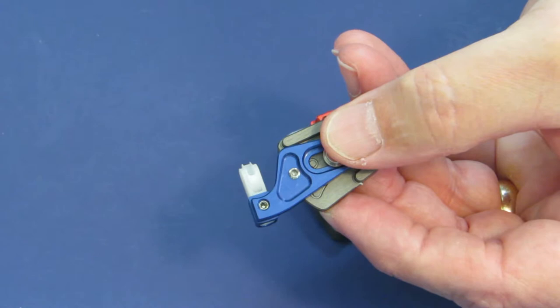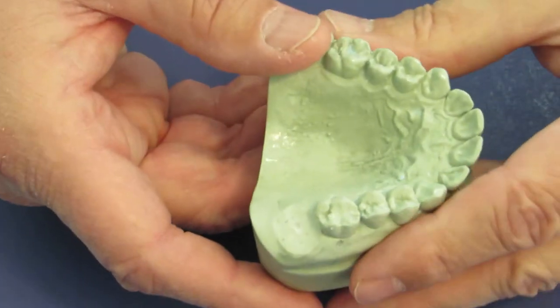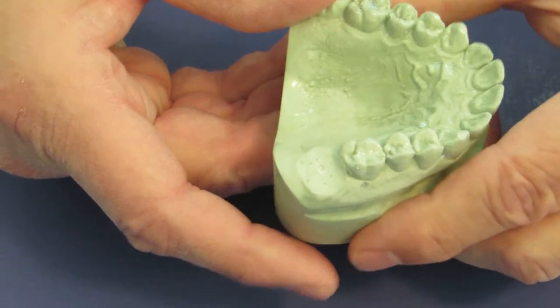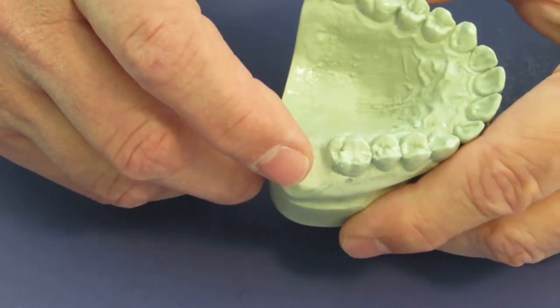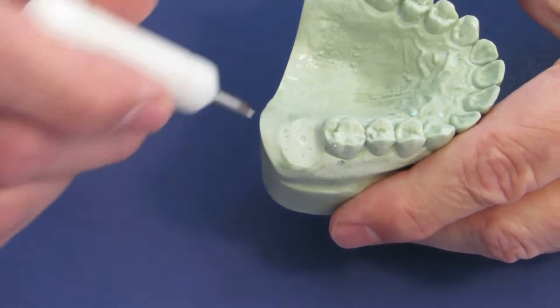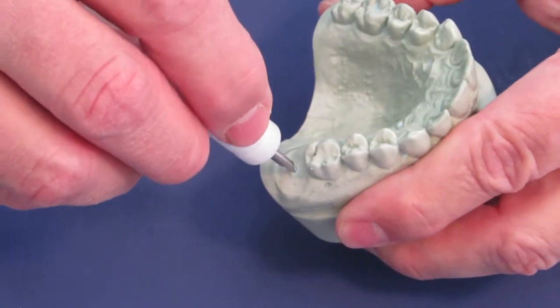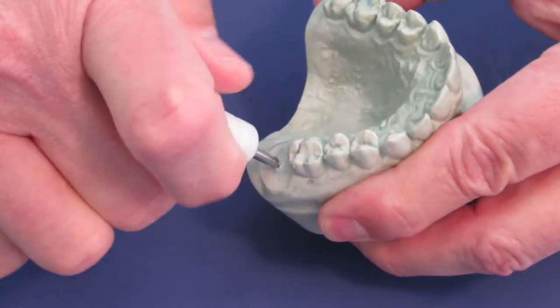So let me just show you how this works. We begin with our model, the model of where we would like to replace the tooth. And we make a small divot either with our handpiece or I have a hand drill right here that I can make a small divot.